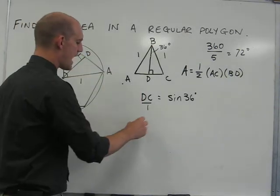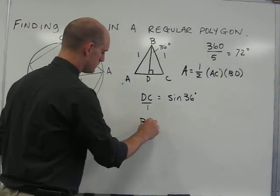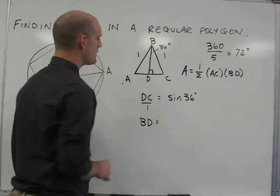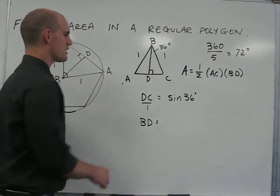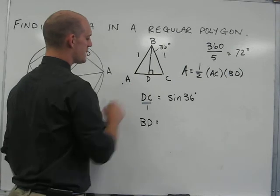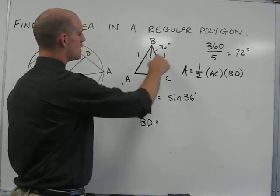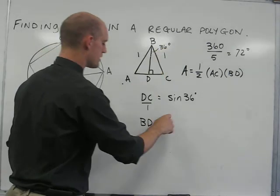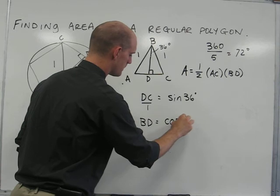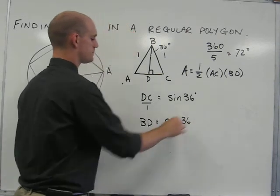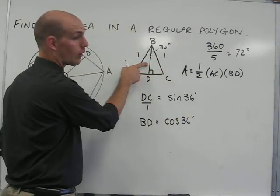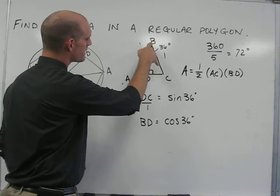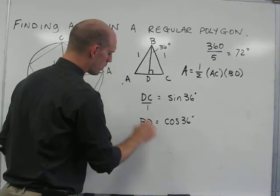Next, we need to find the length of the apothem. Because BD is also a leg of the triangle, we can use trig ratios to say that BD is equal to the cosine of 36, because the cosine of 36 would be the adjacent side, or BD, over the length of the hypotenuse, BC, or 1.